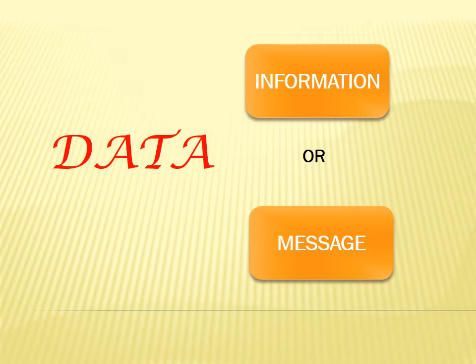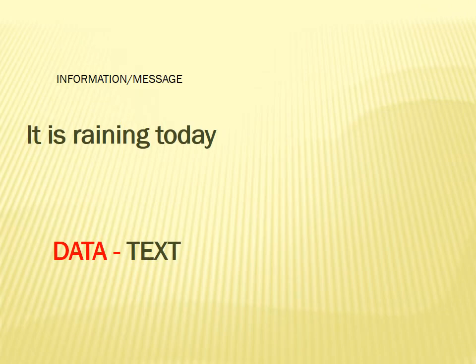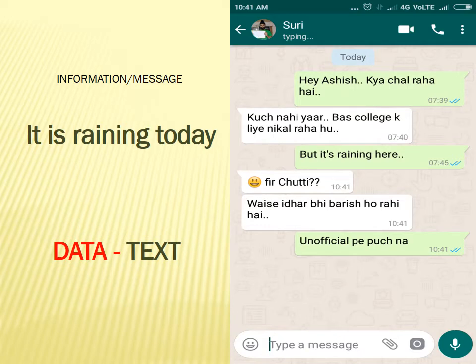Let's understand this with an example. Suppose there are two best friends who want to communicate information to each other — specifically that it is raining today. They are living in different areas and need to communicate whether it is raining at their place or not, and whether to come to college. So how will the first friend, Suri, communicate this to his friend Ashish? He can simply send a WhatsApp message saying 'it is raining today.' The text is the data in this case.